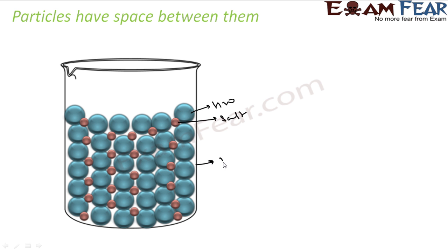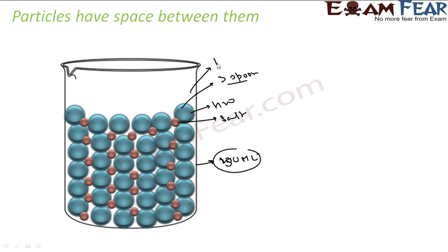For example, if you take 250 ml of water and add 3 spoons of salt, it can accommodate. But if instead you add 100 spoons, do you think it will accommodate? No, because there is limited space — there is limited space for incoming salt or sugar.